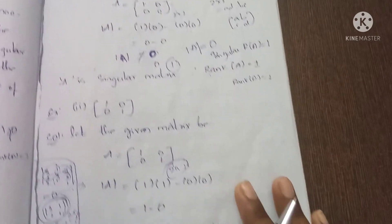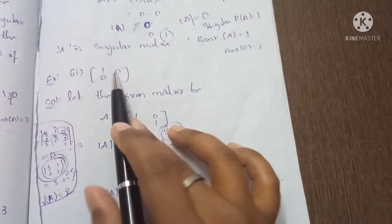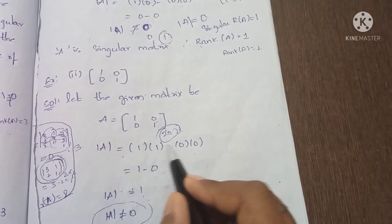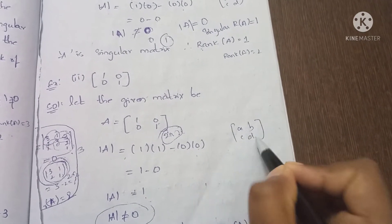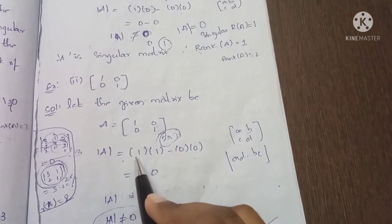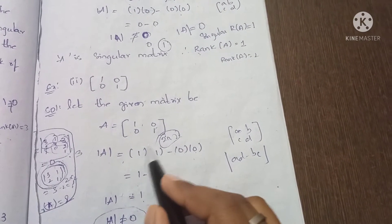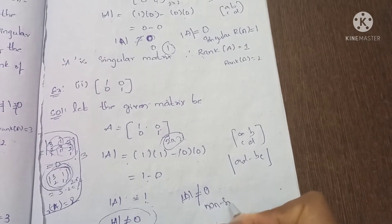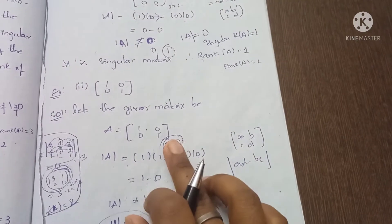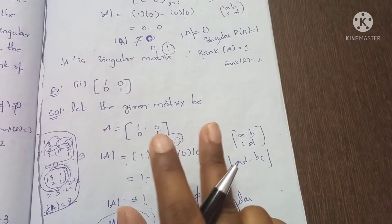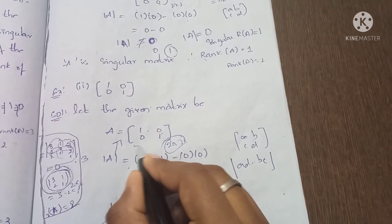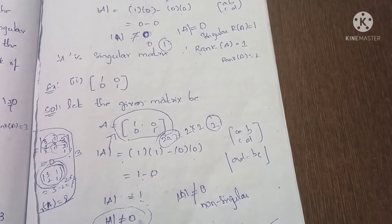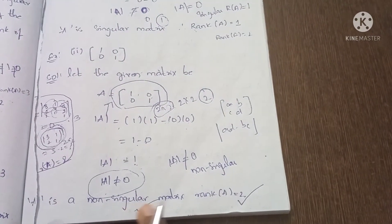Next question: find the rank of [1, 0; 0, 1]. We find the determinant AD minus BC: 1 into 1 minus 0 into 0 equals 1 minus 0 equals 1. The determinant is not equal to 0, so the matrix is non-singular. Since it is a 2x2 non-singular matrix, the maximum order is 2. Therefore rank of A equals 2.